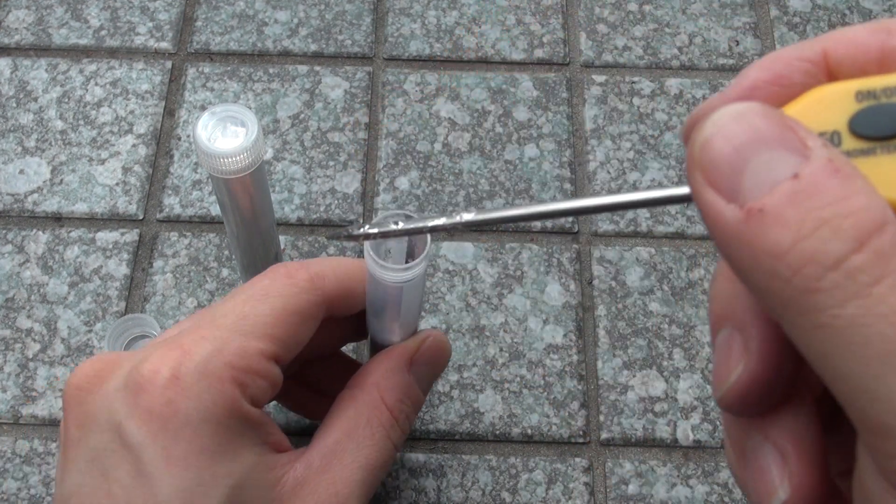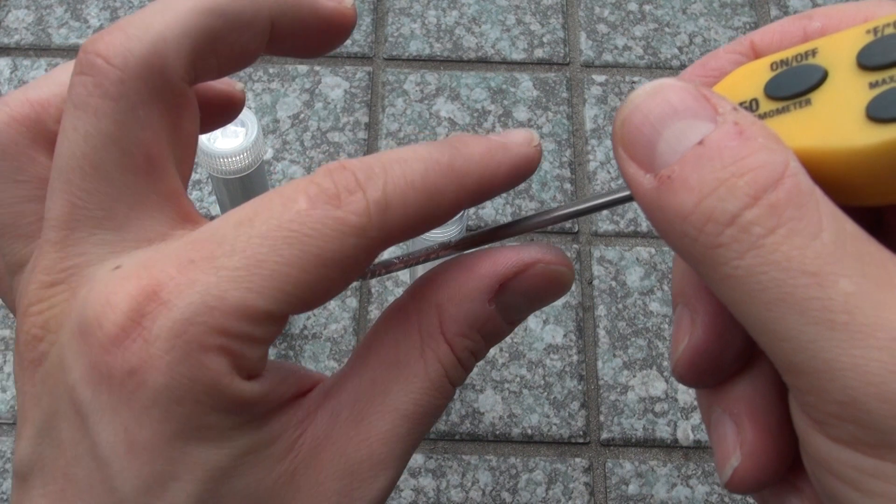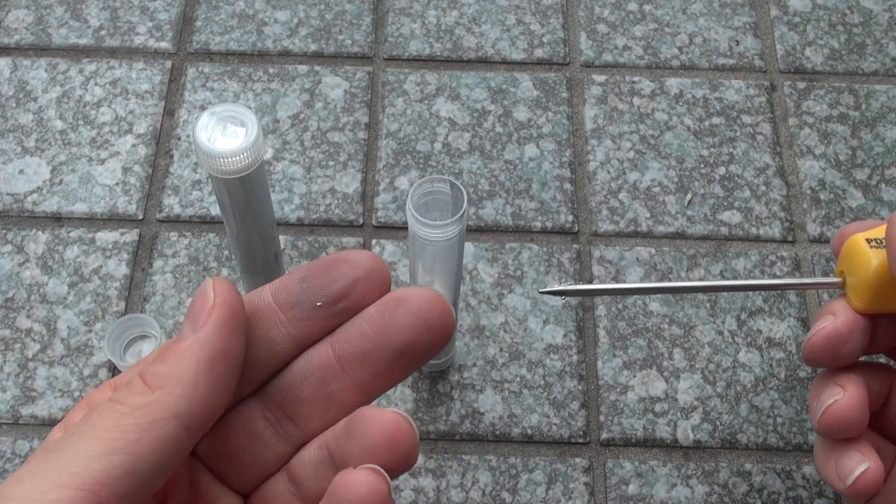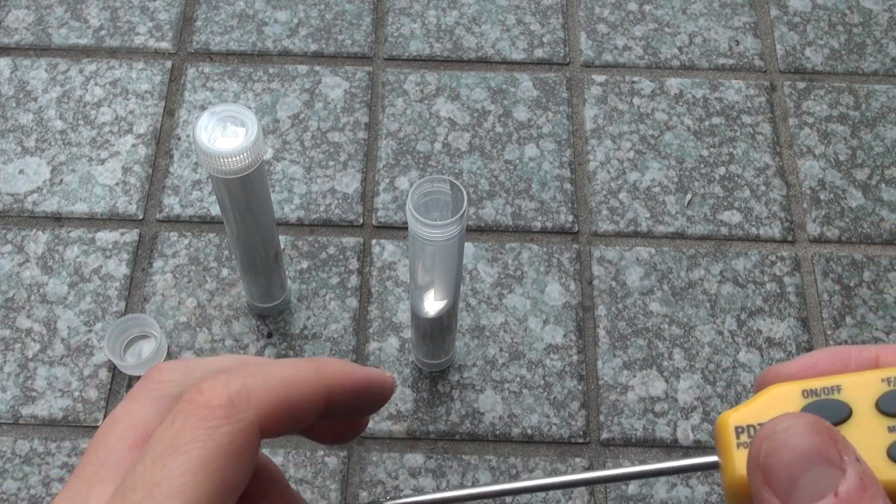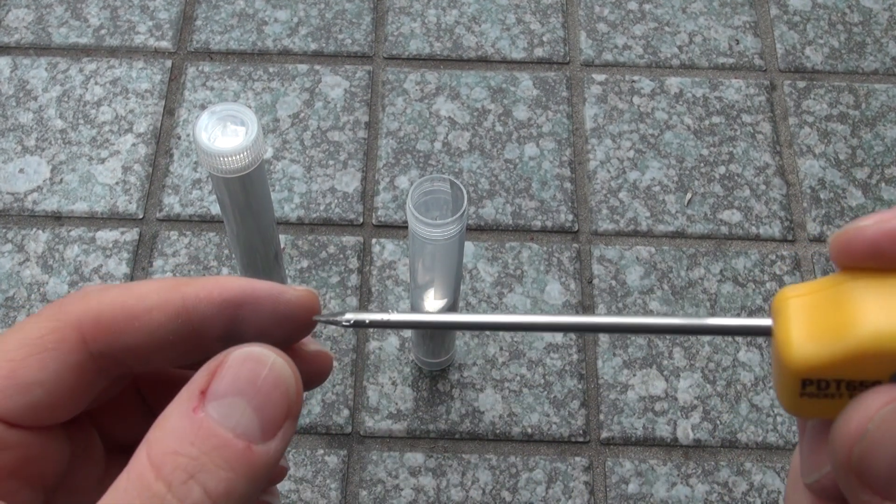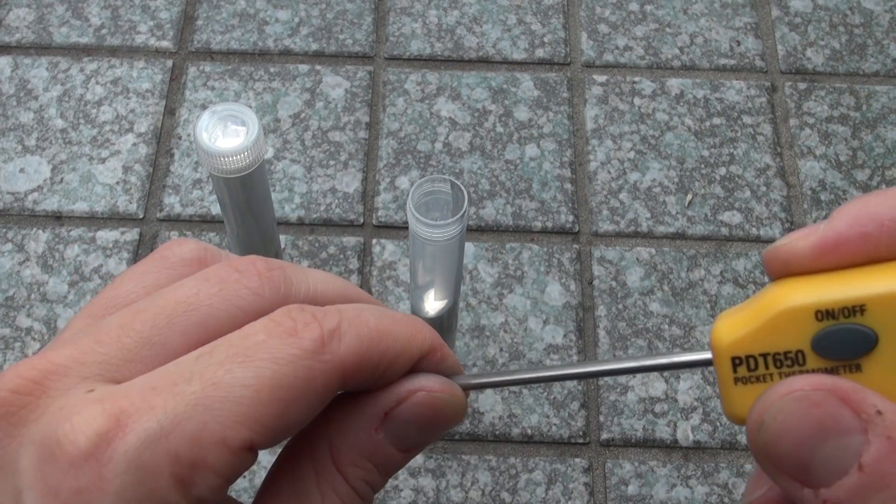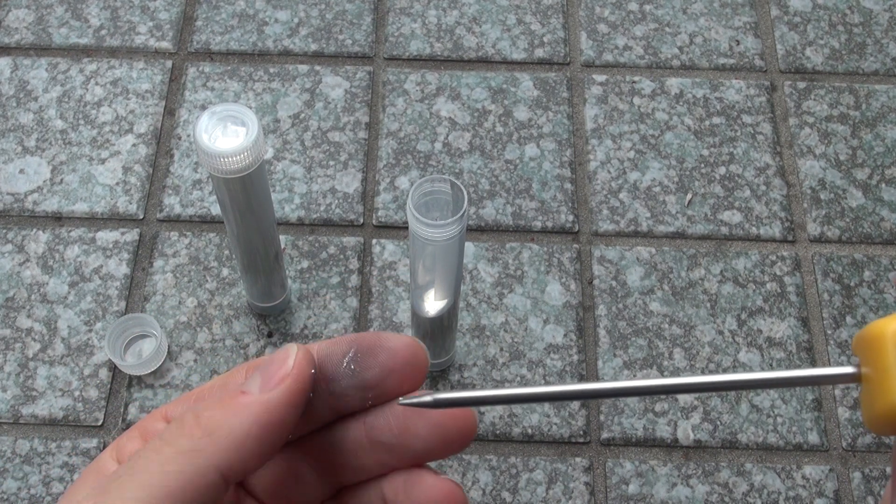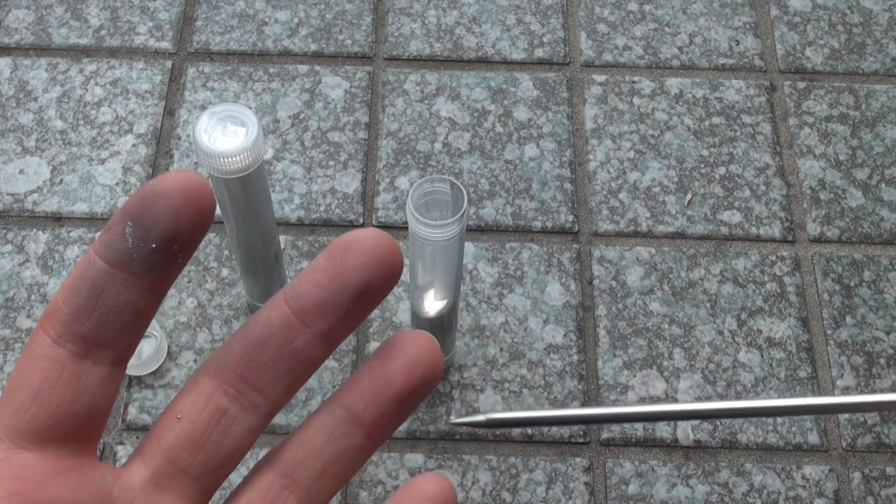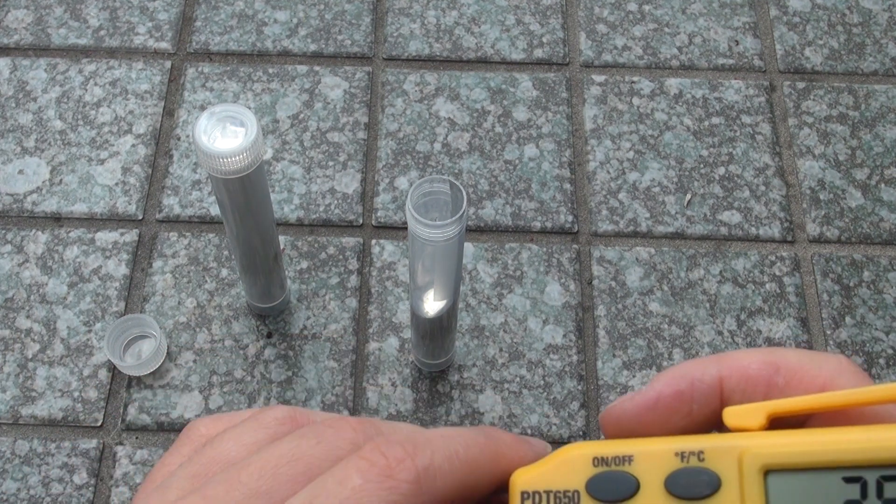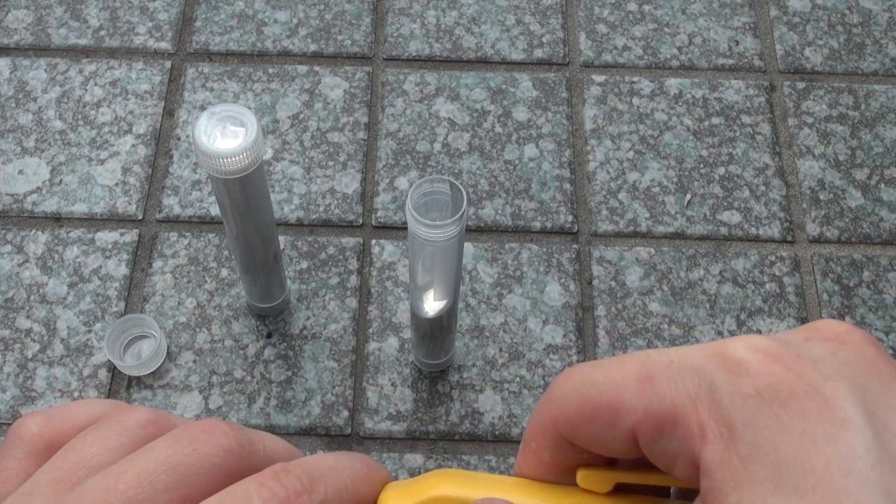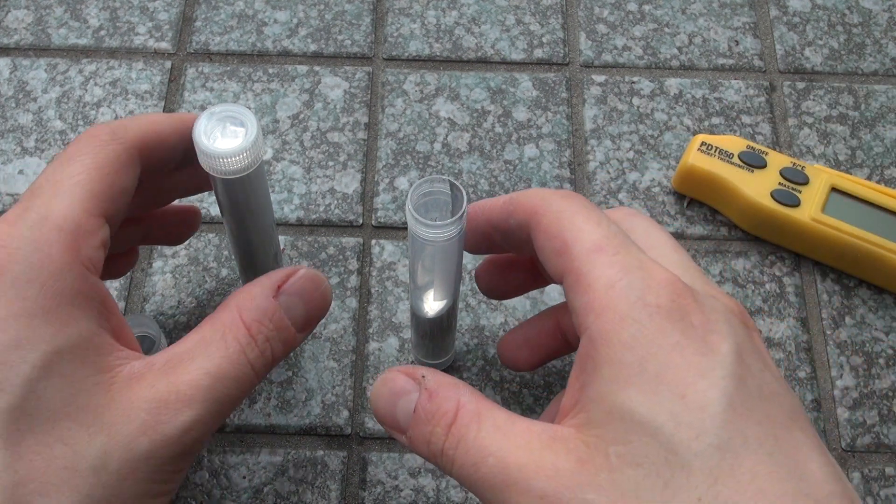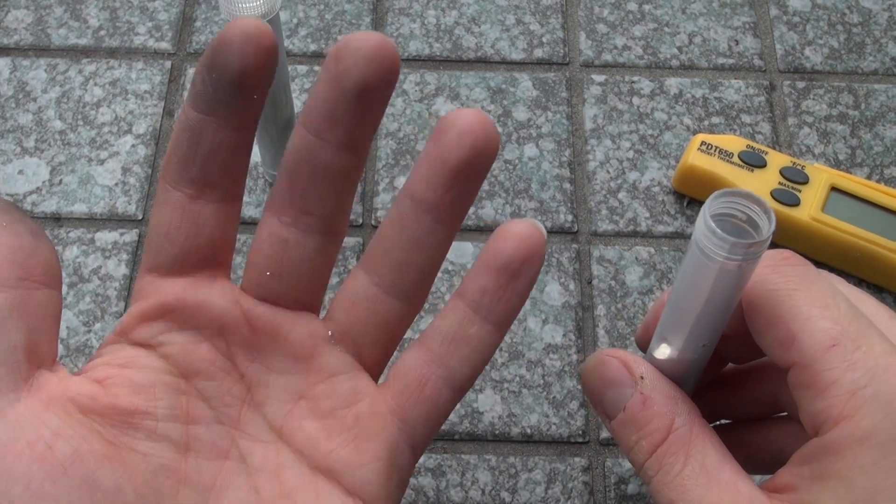Now what I've noticed with galinstan, it wets the surface, that's because it contains gallium, but it doesn't wet as badly as pure gallium does. And I can see little beads of it, which is interesting. Yeah, it doesn't wet as much as pure gallium would do, nor does the combination of the indium and gallium compound.